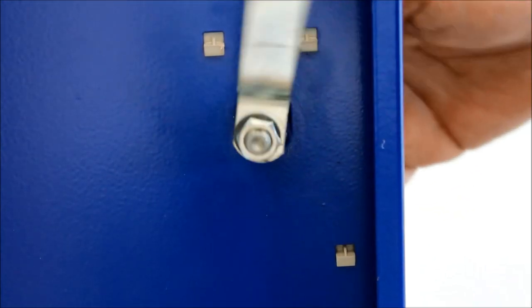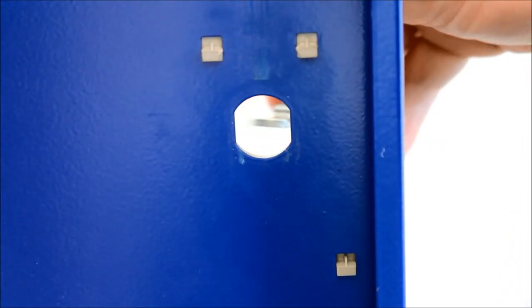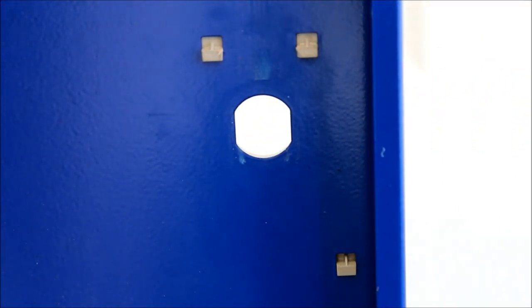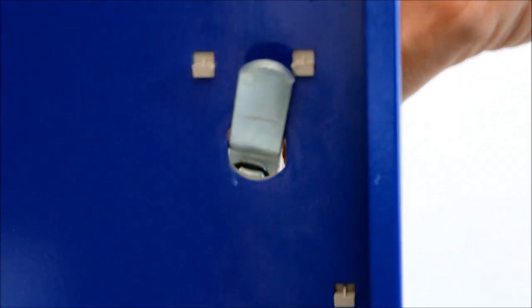You can then put the cam up into the upwards position and simply pull the lock out. To replace the lock or to put a new one in, you simply insert the lock in the upwards position again through the hole in the locker door.